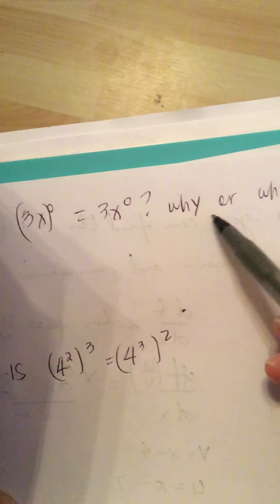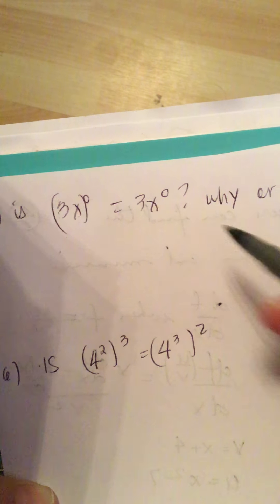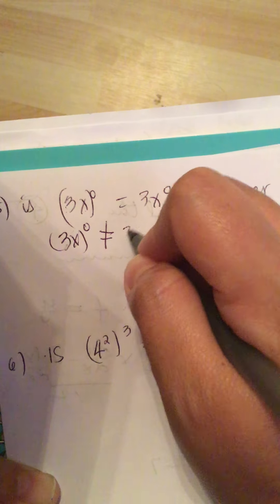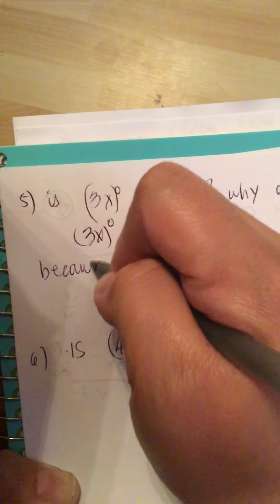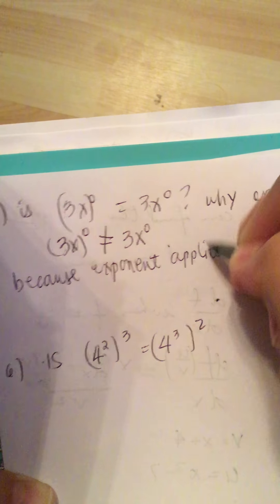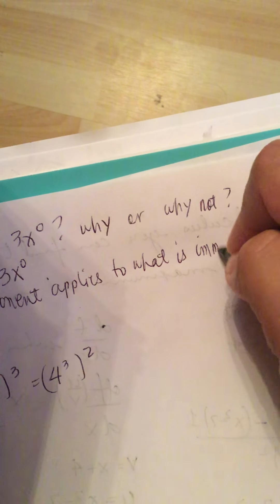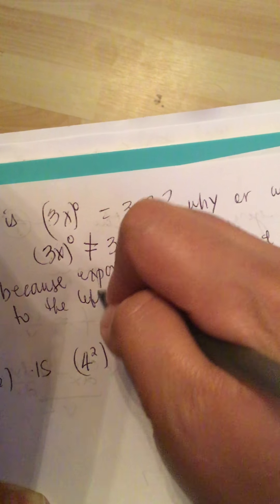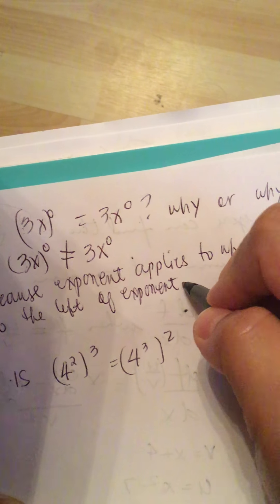If (3x)^0 equals 3x^0, why or why not? These two are not the same. (3x)^0 is not equal to 3x^0 because the exponent applies to what is immediately to its left.